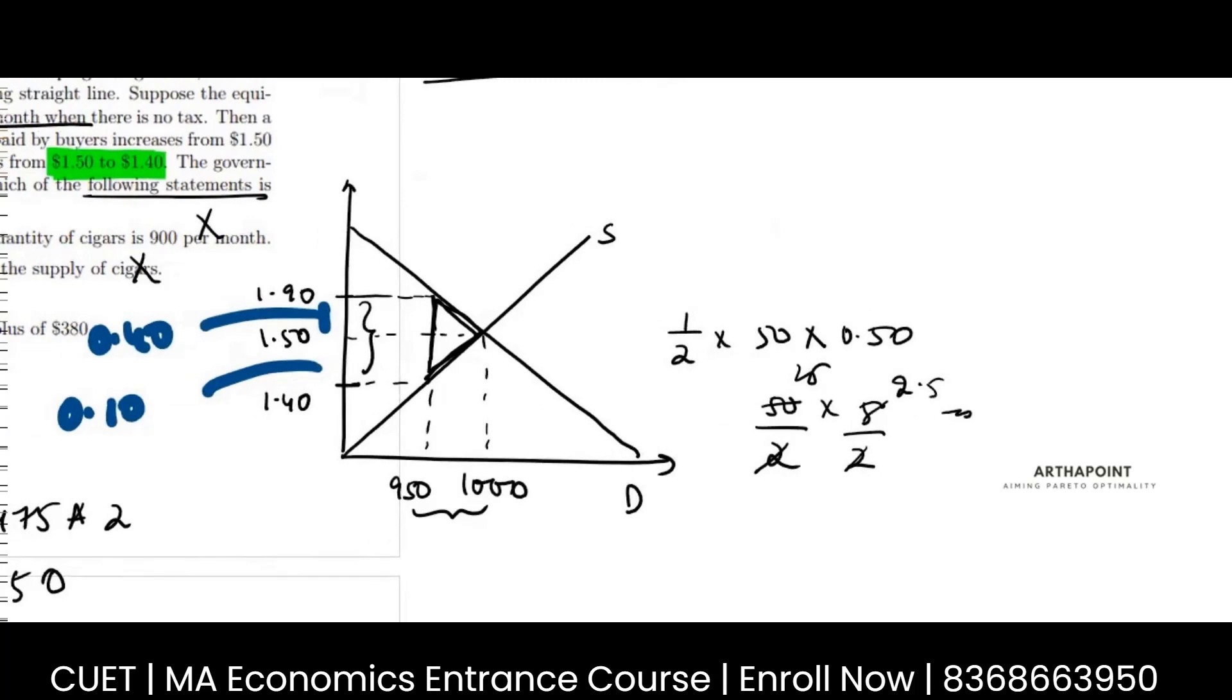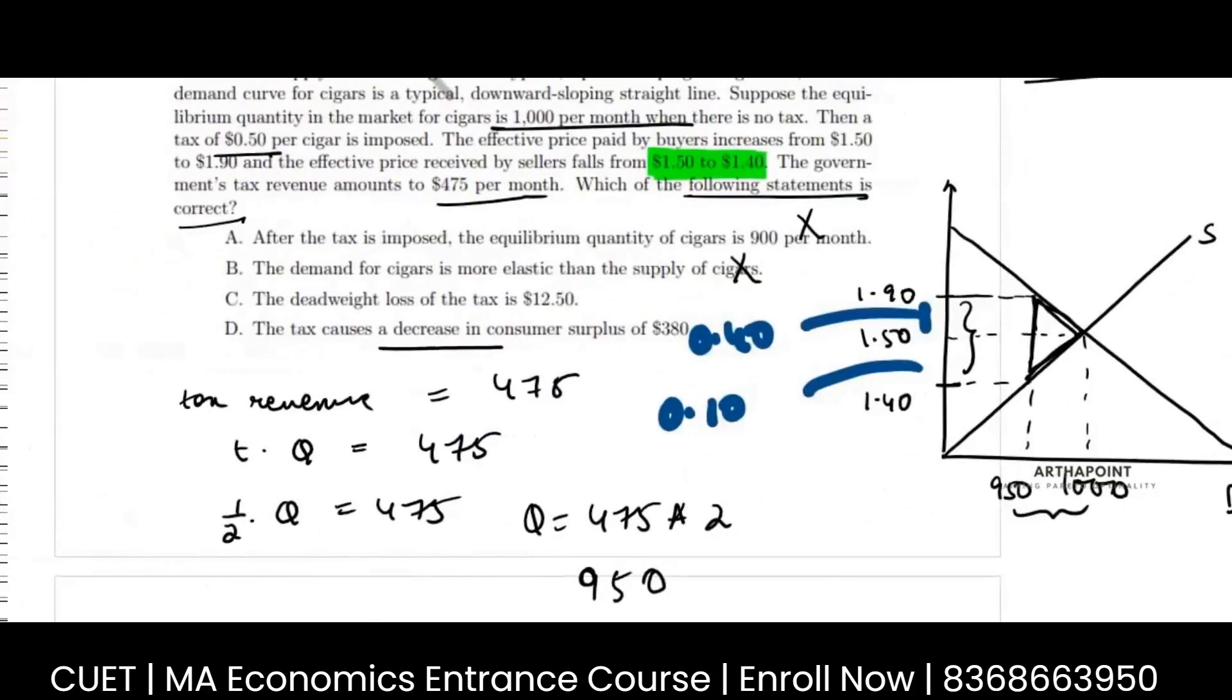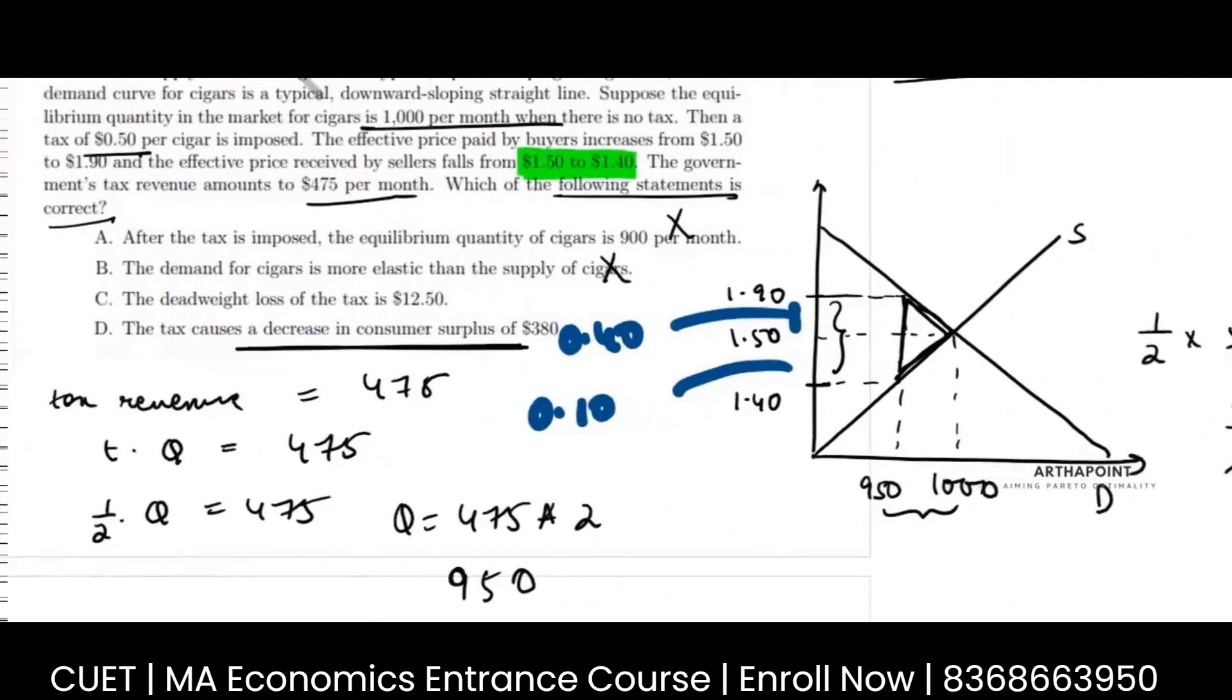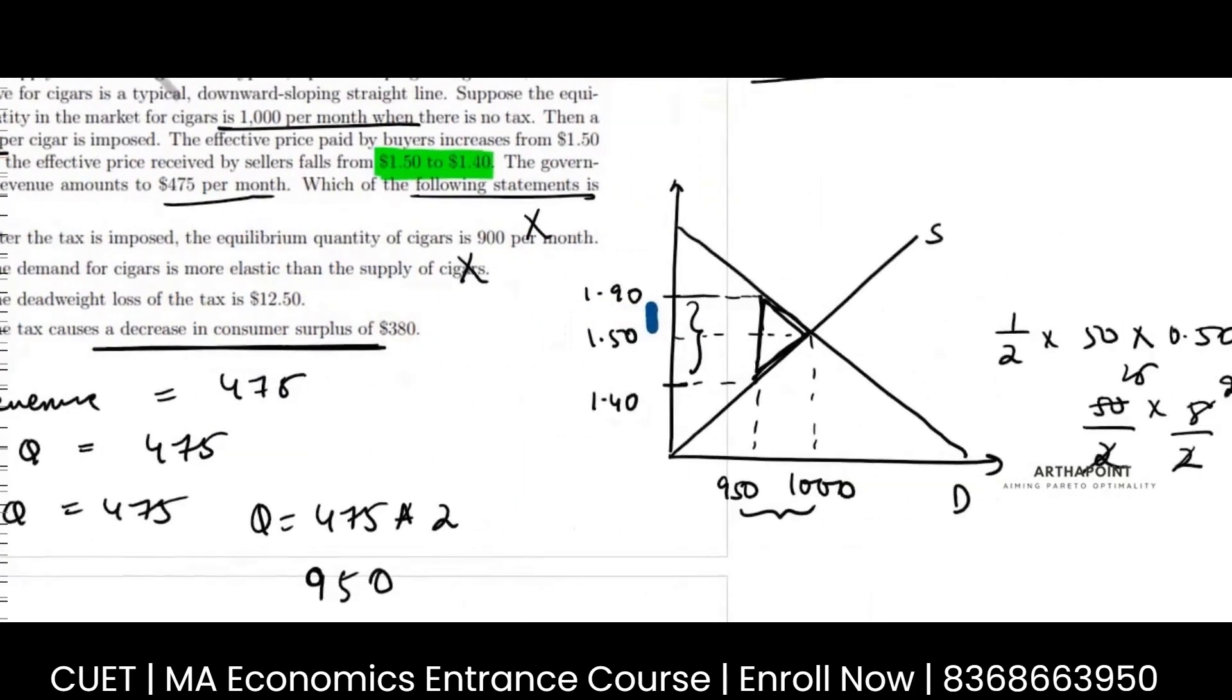This is going to be 62.5 something like that. So this is also not your answer. Now the next part is that the tax causes a decrease in consumer surplus of 380. So your initial consumer surplus was this, and your new consumer surplus is area above the price, below the demand, of this. So the change in consumer surplus is this - this is the decrease in consumer surplus.